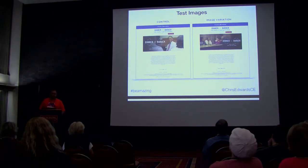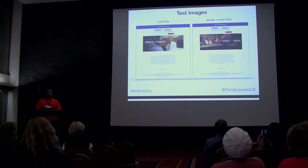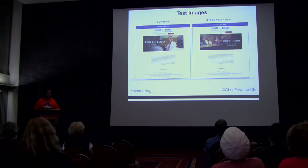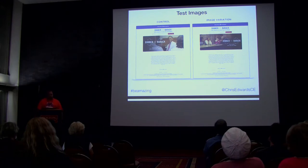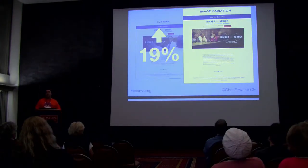You also want to test images. During the Obama campaign, they were really famous for the amount of A/B testing they did — you could almost never go to the site and get the same version. They did a test where they changed two images: one was a real close-up shot and the other was more of a group conversation scene. The group conversation image on the right won, with a 19% better interaction rate on filling out the form above the image.